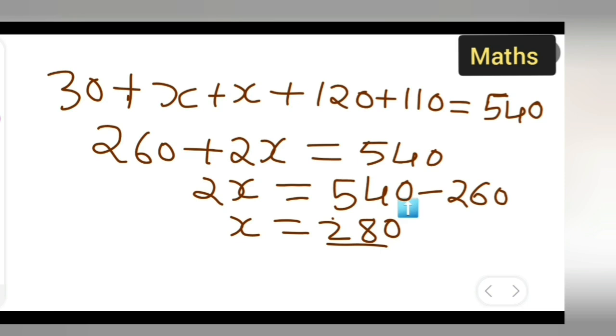And this divided by 2: 2 into 1 is 2, 2 into 4 is 8, 2 into 0 is 0. Therefore, the value of x we got is 140 degrees.